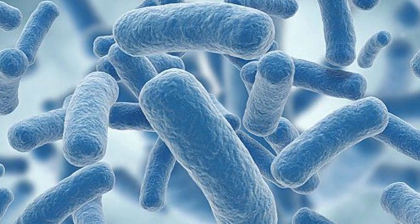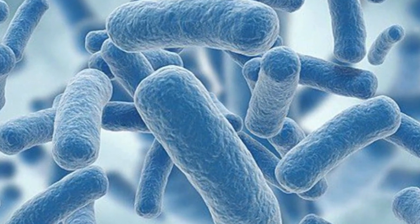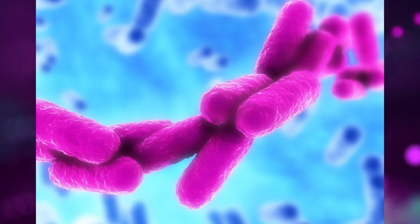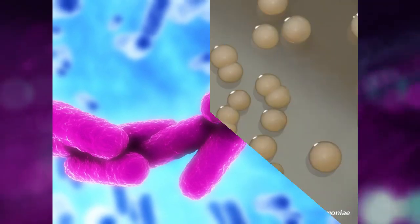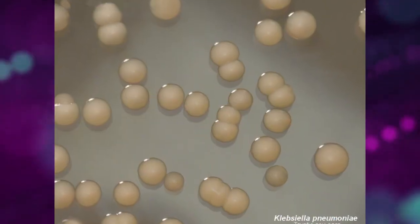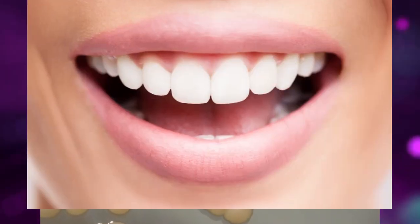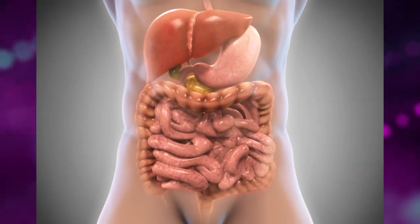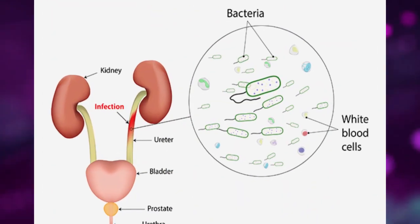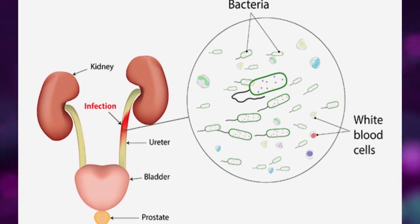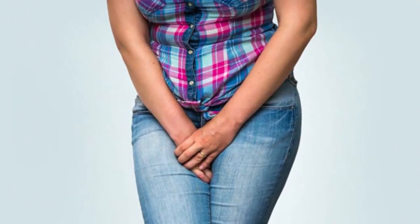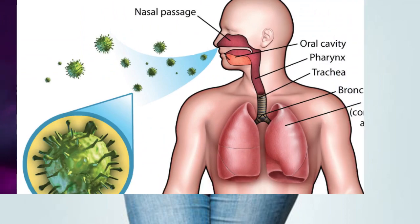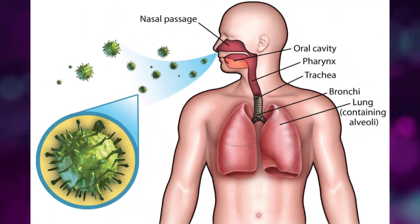Klebsiella is a gram-negative, anaerobic bacterium, which under the microscope is shaped like a rod. It belongs to the family Enterobacteriaceae, and is a normal commensal living in the mouth and gut. However, when Klebsiella becomes transported elsewhere it becomes pathogenic and is commonly associated with UTIs, wounds, and respiratory infections.